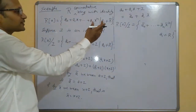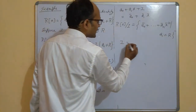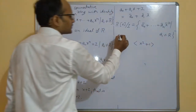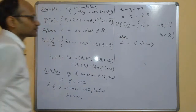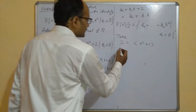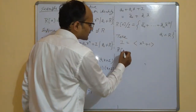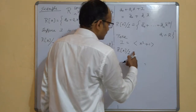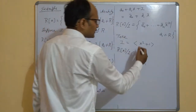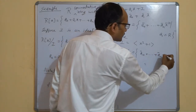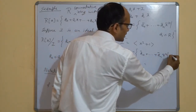Since we have assumed it is a commutative ring with identity, suppose I is the ideal generated by one element x² + 1. This is just to explain how this ring will look. Then R[x]/I will again look like {ā₀ + ... + āₙx̄ⁿ such that aᵢ belongs to R}.